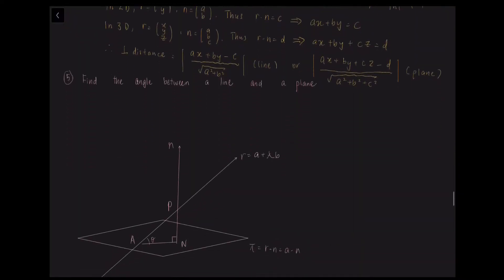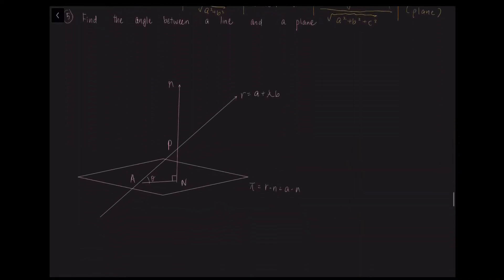The next theory: how do we find the angle between a line and a plane? Hold a pen at an angle to your desk and imagine a light source overhead beaming directly downwards. The angle theta between the line represented by the pen and the plane is the angle between the pen and the line representing its shadow cast upon the desk. This angle cannot be found directly, as a vector representing the direction of the shadow is not known.